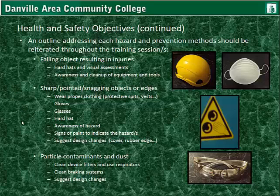Sharp pointed or snagging objects or edges: to prevent this, wear proper clothing, protective suits, vests, and gloves that resist tearing or snagging against sharp objects. Glasses, hard hats, awareness of possible hazards, and signs or paint to indicate these hazards need to be included. Suggest design changes such as adding a cover or rubber edge. Particle contaminants and dust: clean device filters and use respirators, clean braking systems, and suggest design changes. Slippery surfaces can be prevented using grips, slip-resistant shoes or boots, and identifying slip areas like near gearboxes. All of this is to prevent hazards and injuries, which is our main objective in this lesson.